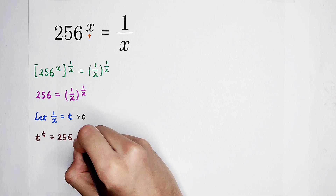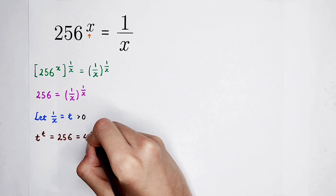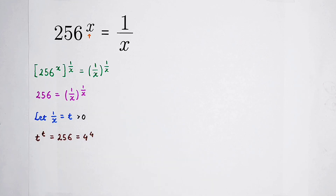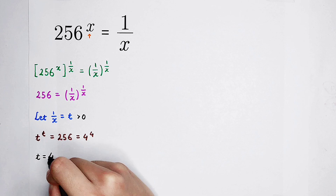256 is 4 to the power of 4. So the equation turns into t to the power of t equals 4 to the power of 4, and we can get t is equal to 4.